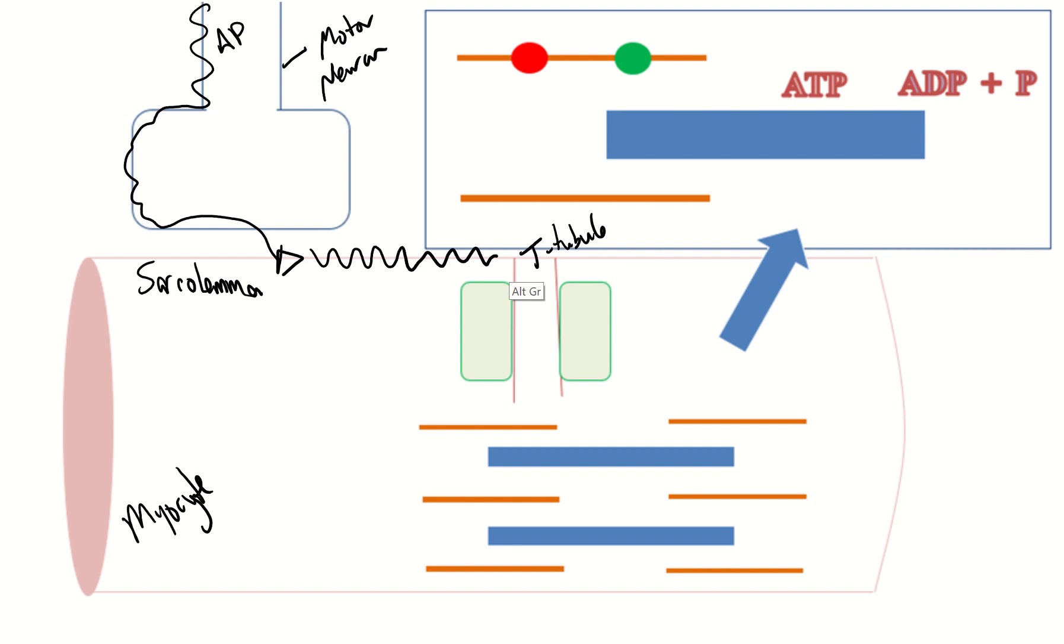When it reaches a T tubule this action potential will travel down the T tubule and it's going to activate the release of calcium from the terminal cisternae and this terminal cisternae is a part of the sarcoplasmic reticulum.